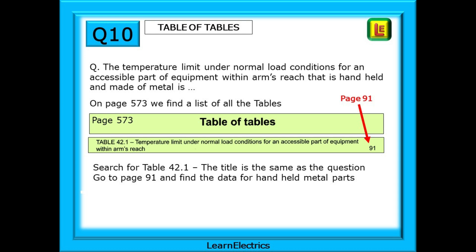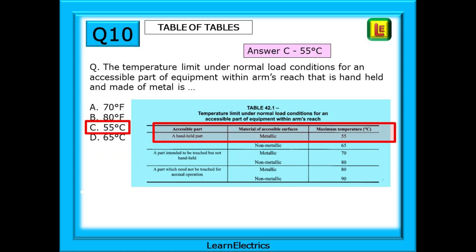And find the data for handheld metal parts. Here we are on page 91 and table 42.1 is shown. Looking at the table we can follow the top line for handheld and for metallic parts and it shows that the maximum temperature should not exceed 55 degrees centigrade and we should choose answer C.